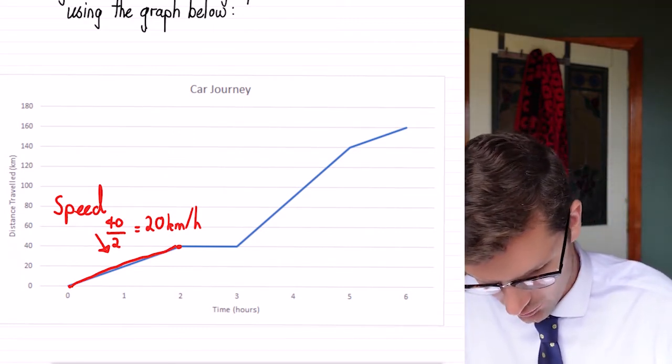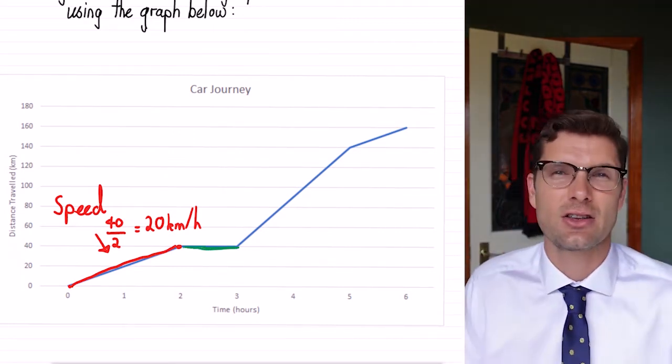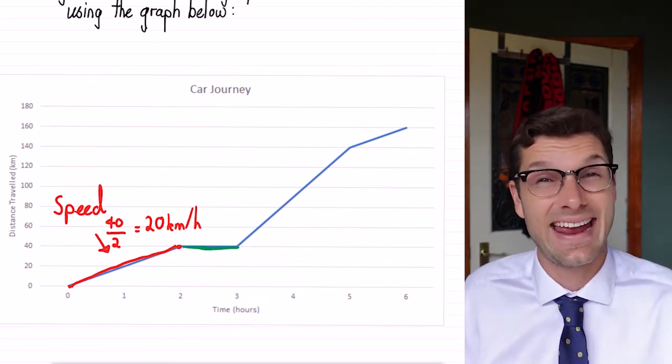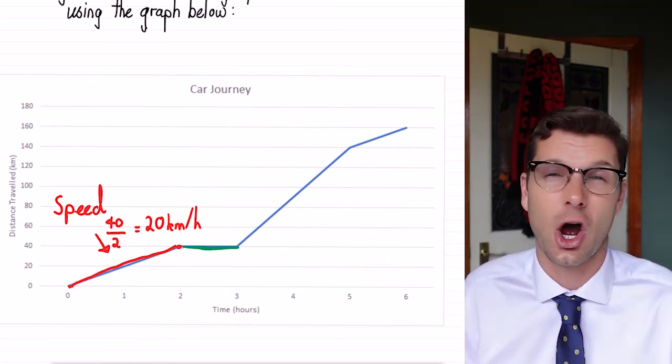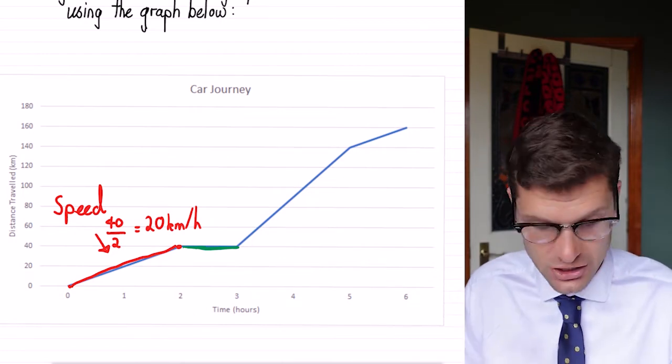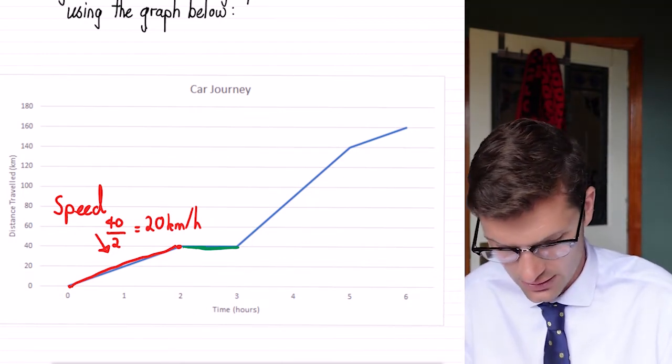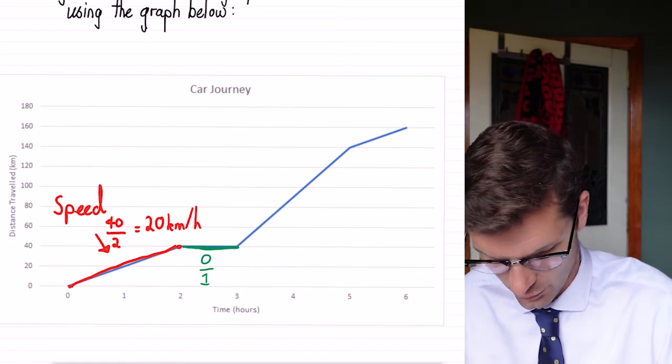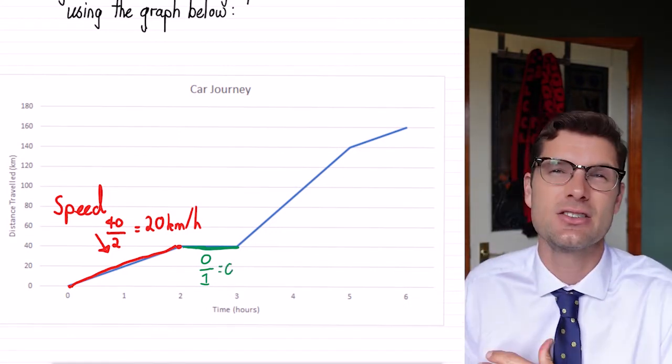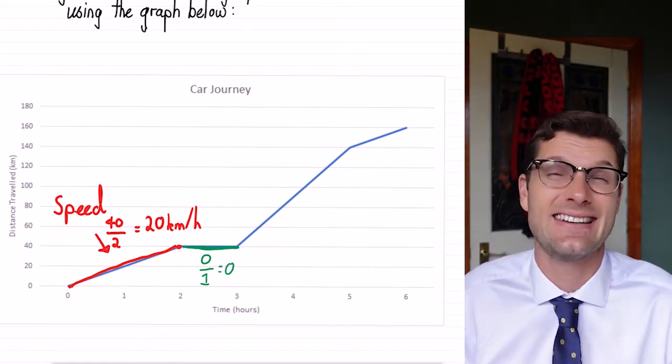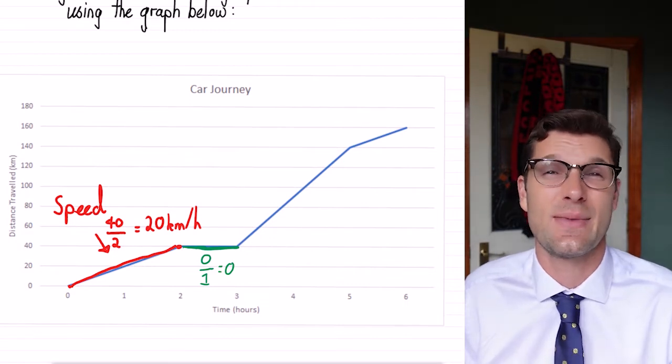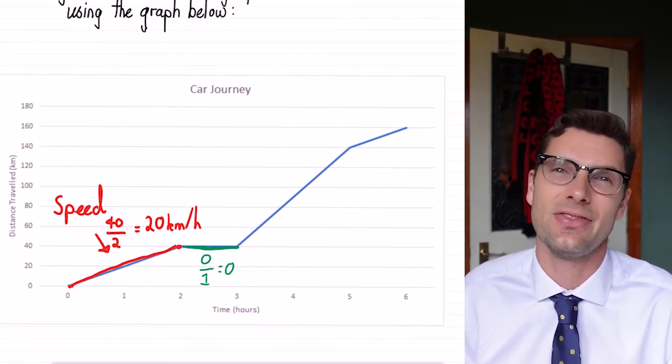The second part here is this horizontal line. So that means that we haven't traveled any distance in this whole hour. So our change in distance is zero divided by the one hour that we've stayed there, which is equal to zero. So anytime you see a horizontal line in a distance time graph, it does mean that there's no movement at that time.